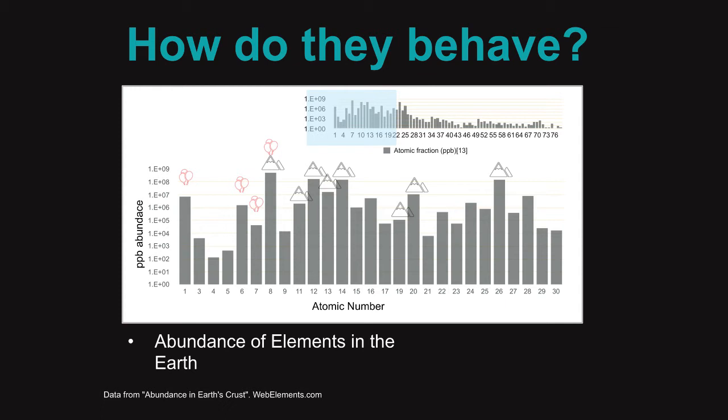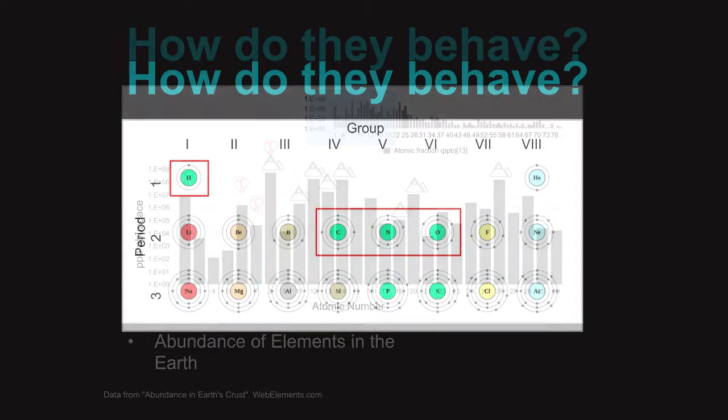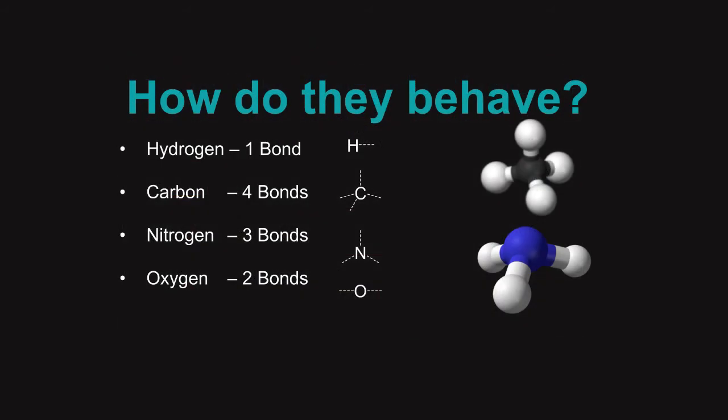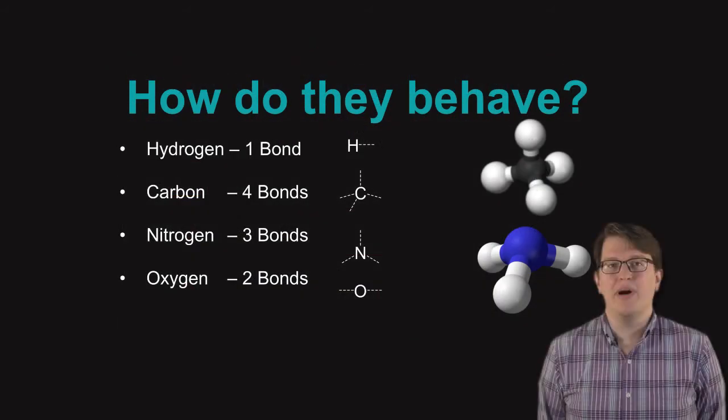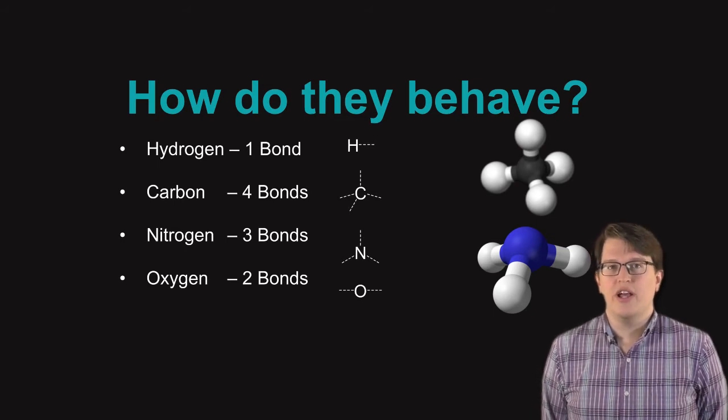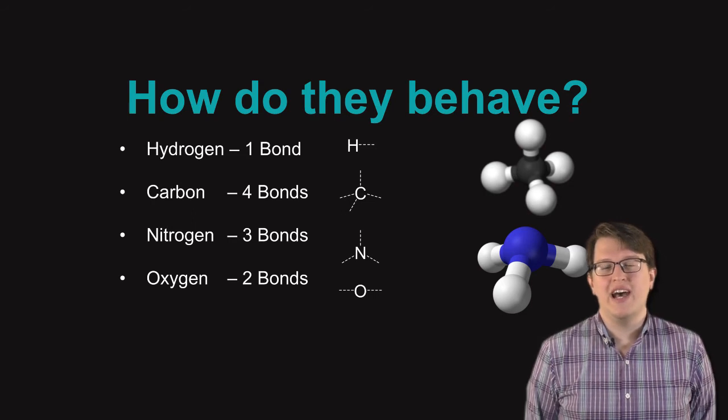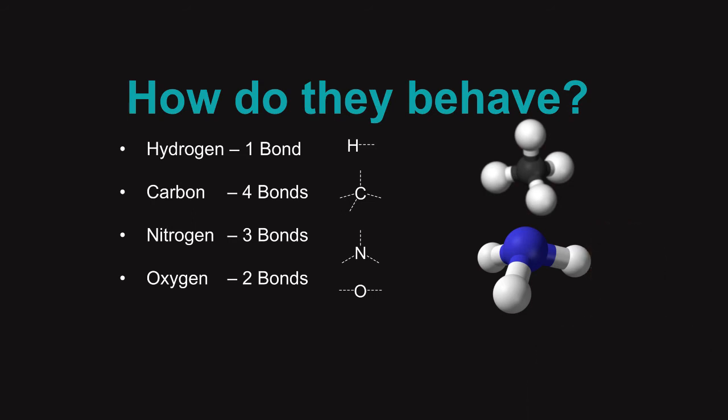However, abundance isn't the only question. We also need to talk about how these behave at an electronic level. The most important part is based on the number of electrons that are available to form chemical bonds. Hydrogen has one electron. Carbon has four. Nitrogen has three that are available to form bonds, and oxygen has two. For hydrogen, at best with one bond, you can form hydrogen gas. That's not a very interesting basis to form life from.